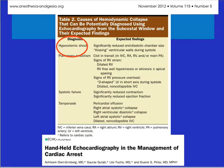The part of hemodynamic shock that we're going to be evaluating is the hypovolemic part of shock. Some conditions, such as tamponade, may also have increased inferior vena cava size, but the major part we're going to talk about is volume status.